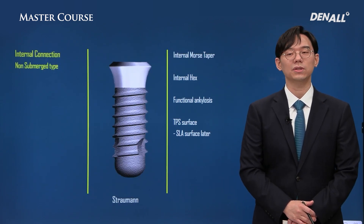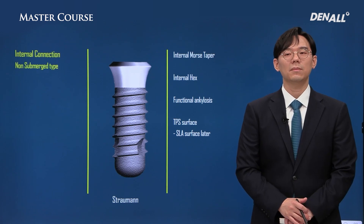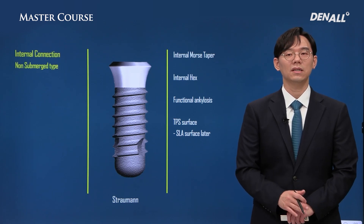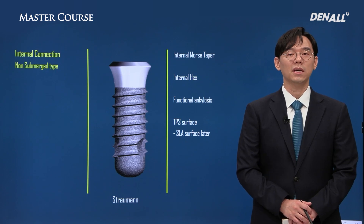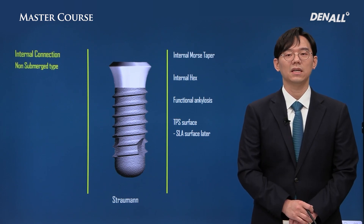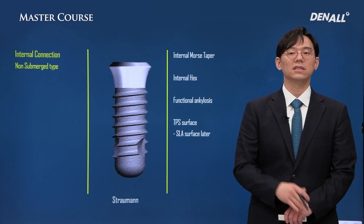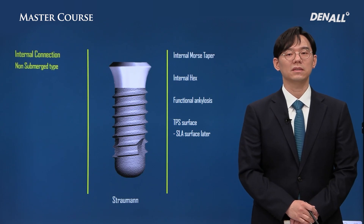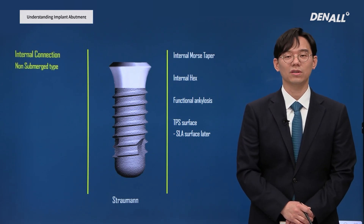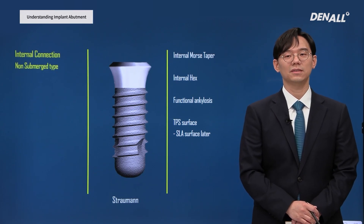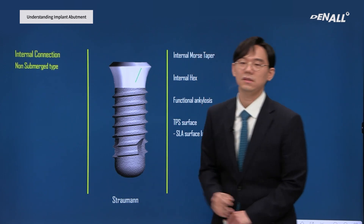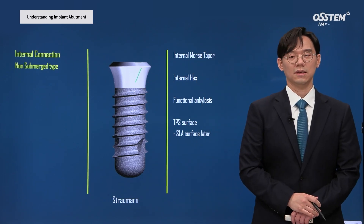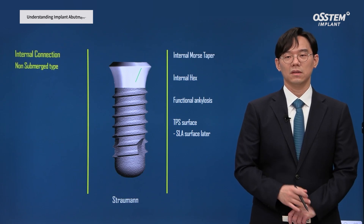Straumann implant was launched thereafter. Unlike Brånemark, it is internal submerged type. At the time, osseointegration was the biggest challenge, and non-submerged surgery was under a lot of scrutiny. It has an 8-degree internal morse taper, and the abutment has a mechanically stable connection structure.